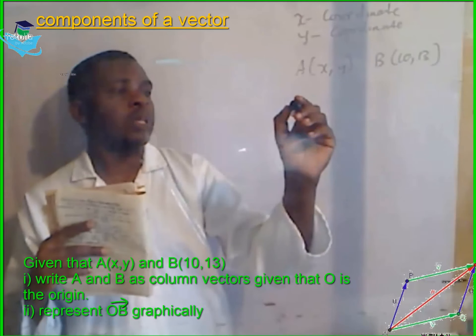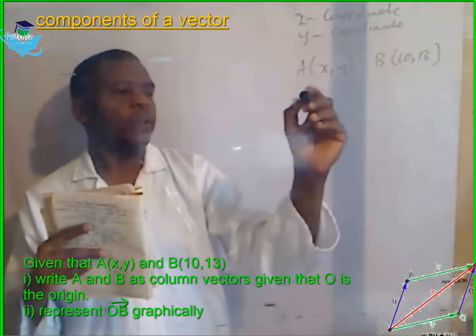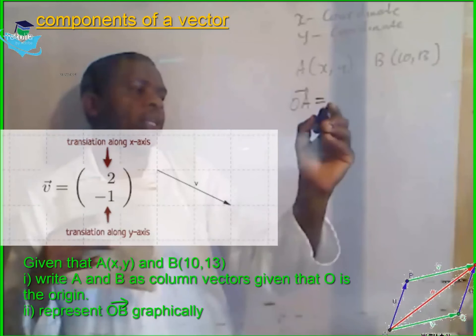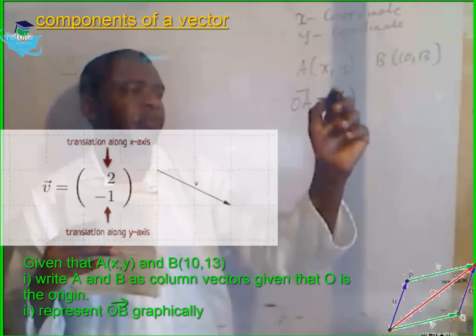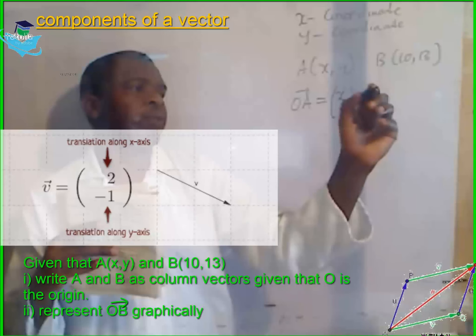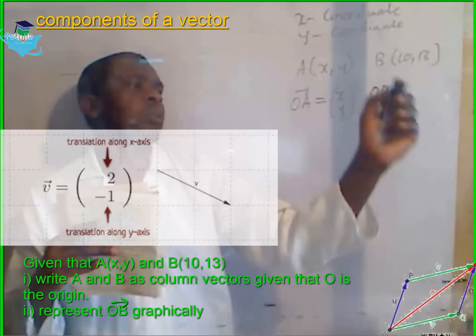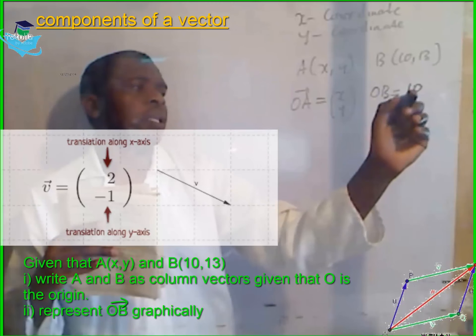So, this is our position vector A. In column form, this will be x, y. Our position vector B, in column form, will be 10, 13.